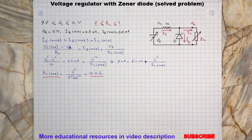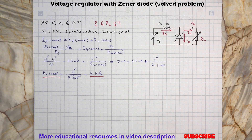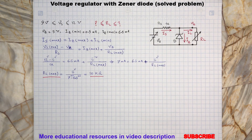Back to the video. Now we assume the unregulated input voltage is at its minimum, which is 9V. In this case, since the input current Is will be at its minimum, we should check what will be the maximum load current where the Zener diode can still get its minimum current needed to provide a fixed 5V at the output.